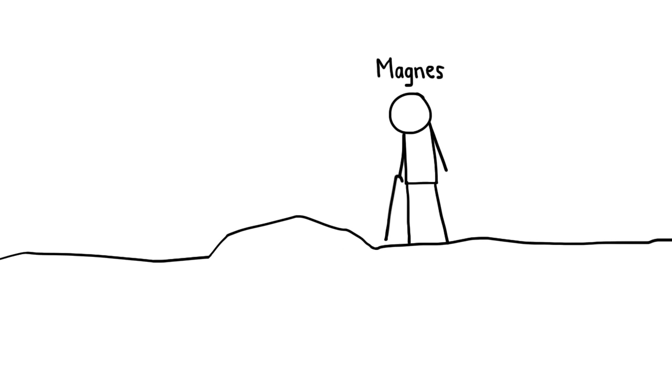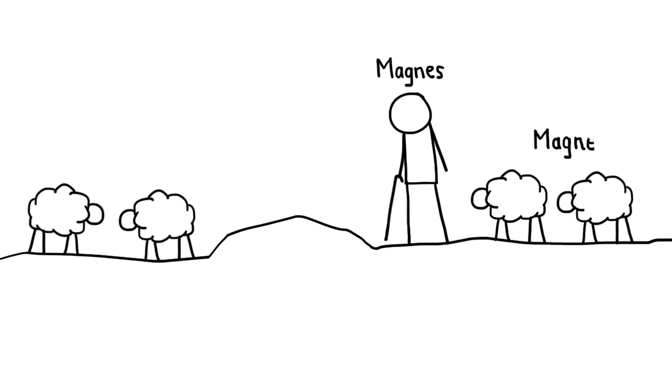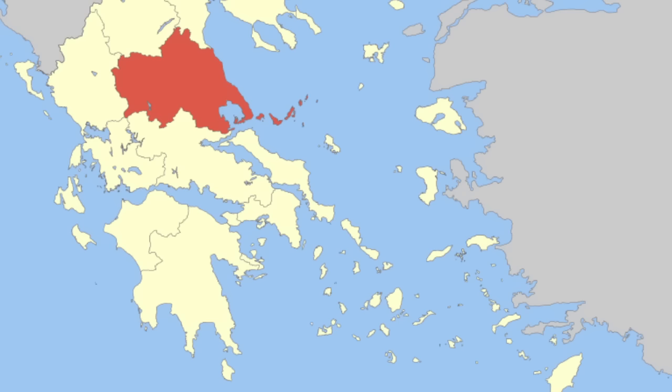About 2,700 years ago, a Cretan shepherd named Magnus was herding his sheep at Magnesia, an area in northern Greece.